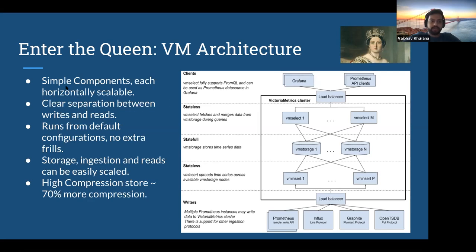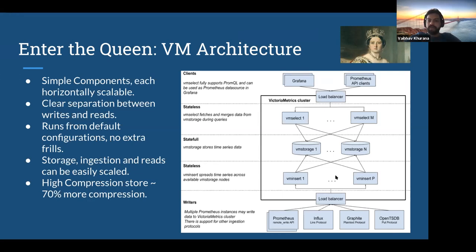To summarize: all the entire components are very simple — you don't have to mingle around with the configurations. That's the best DRP that VictoriaMetrics provides. You just take the VictoriaMetrics cluster and deploy it without much configuration and everything goes smoothly. There's a clear separation between writes and reads — VM Insert handles writes doing remote write to VM Storage, and reads come from Grafana via VM Select. Think about a scenario where all your VM Inserts are down — you'll still be able to query older data because VM Select and VM Storage are still up.